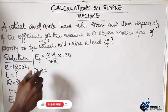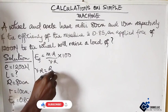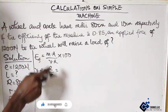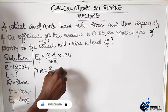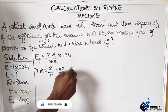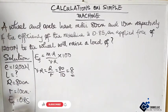For wheel and axle, velocity ratio is the ratio of the big radius over the small radius, which is 80 over 10, giving us 8.